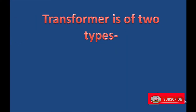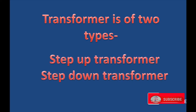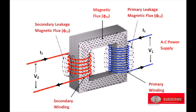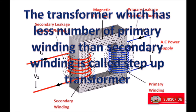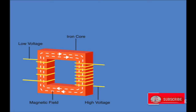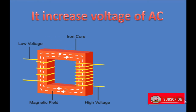A transformer is of two types: step-up transformer and step-down transformer. The transformer which has fewer primary windings than secondary windings is called a step-up transformer. In a step-up transformer, the number of secondary coil turns is more than the number of primary coil turns. It converts low AC voltage to high AC voltage, or it increases the voltage of alternating current.